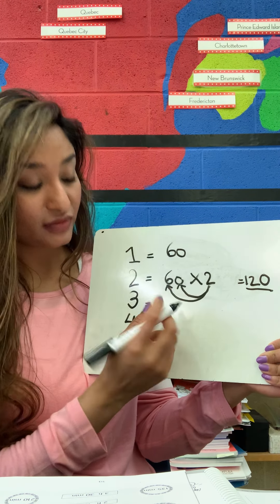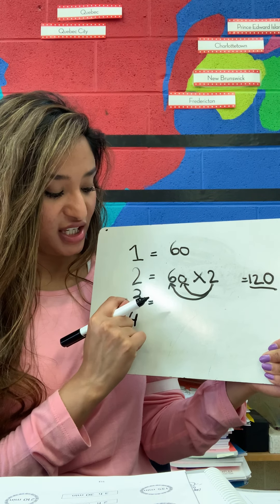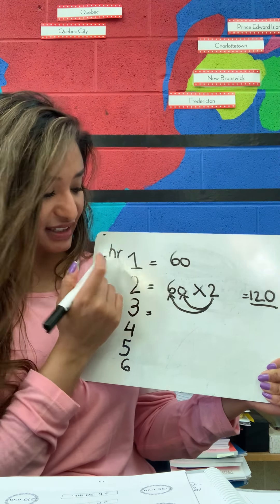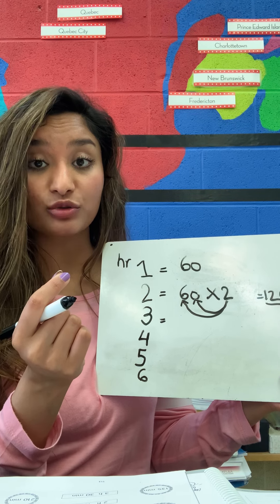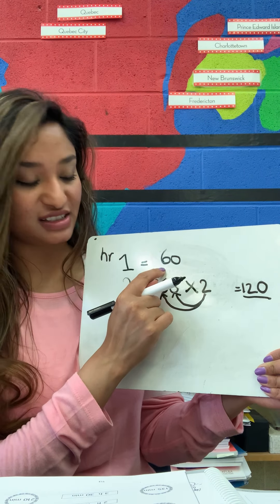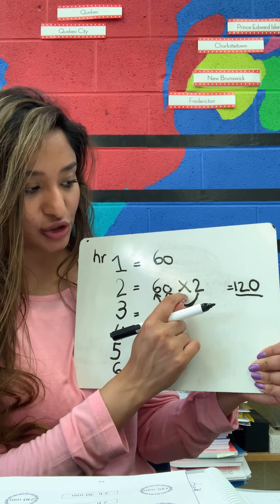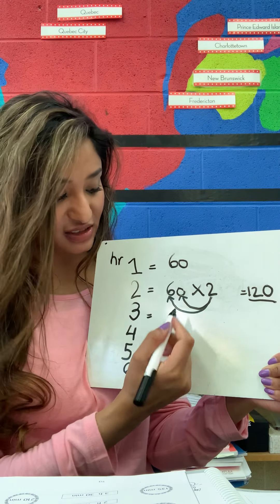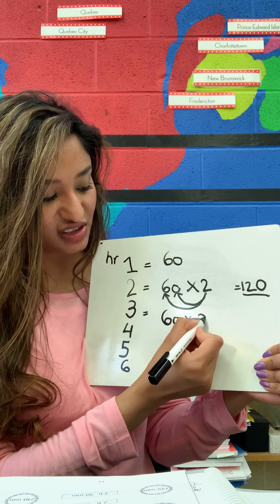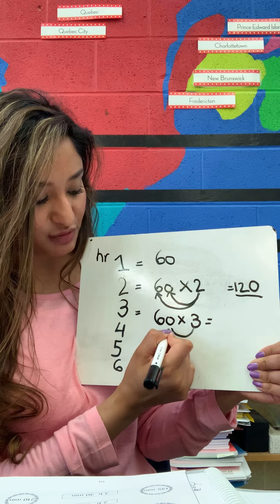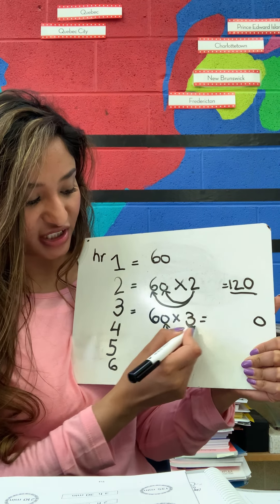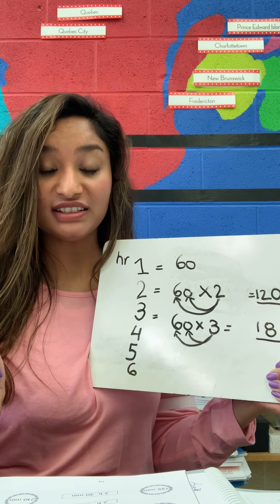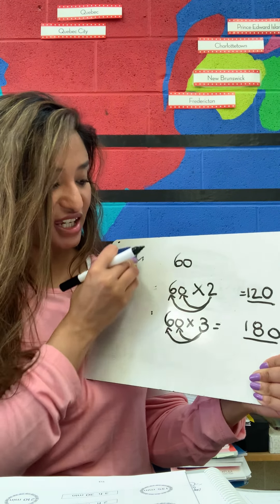Then we go on to three — how many minutes are there in three hours? I was talking about minutes and seconds because in one minute there are 60 seconds. In two minutes there are 60 times two, which is 120 seconds. In three minutes there are how many seconds? 60 times three — three times zero gives me zero, three times six gives me 18 — so 180 seconds. Now let's talk about our hours and our minutes.